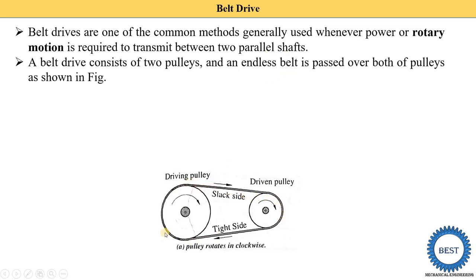Another component is the endless belt. This belt is wound on the pulley and has no end, that's why it is called an endless belt. They are made without joints, which is why they are given the name endless belt. This belt is passed over both pulleys as shown in the figure.